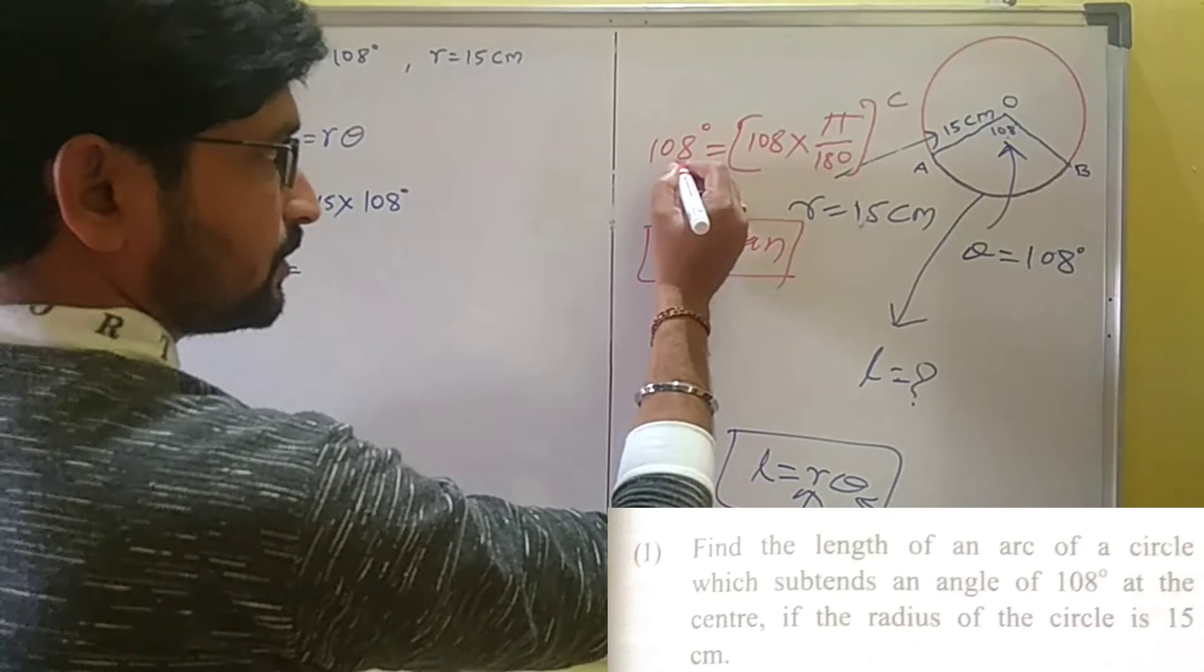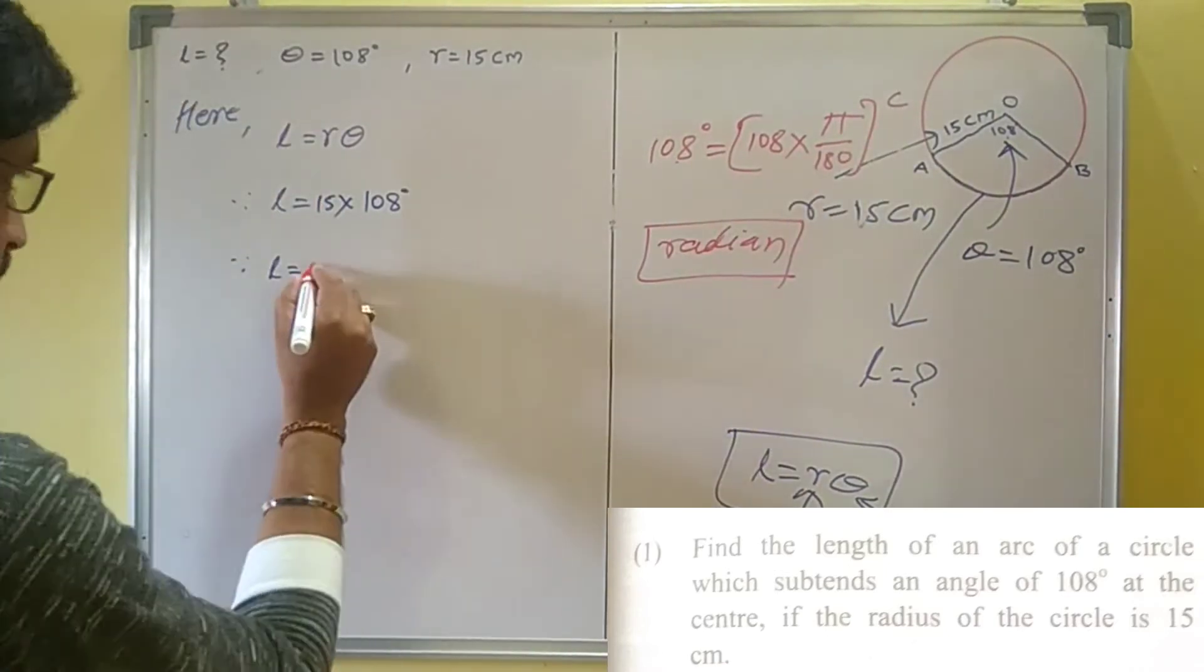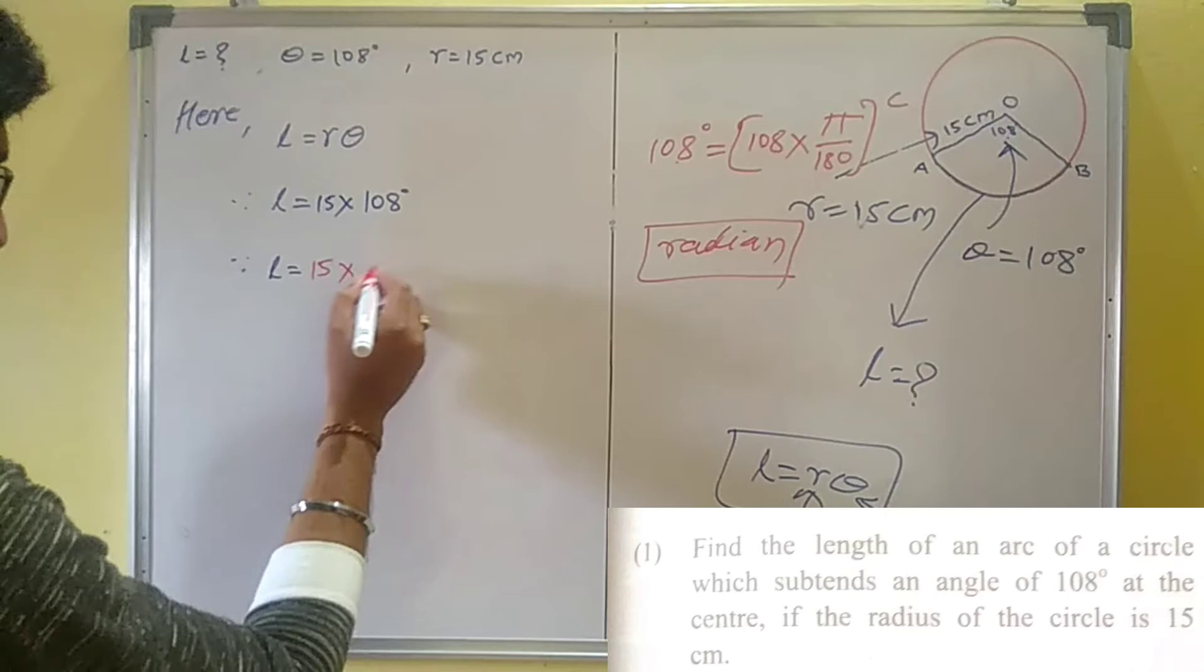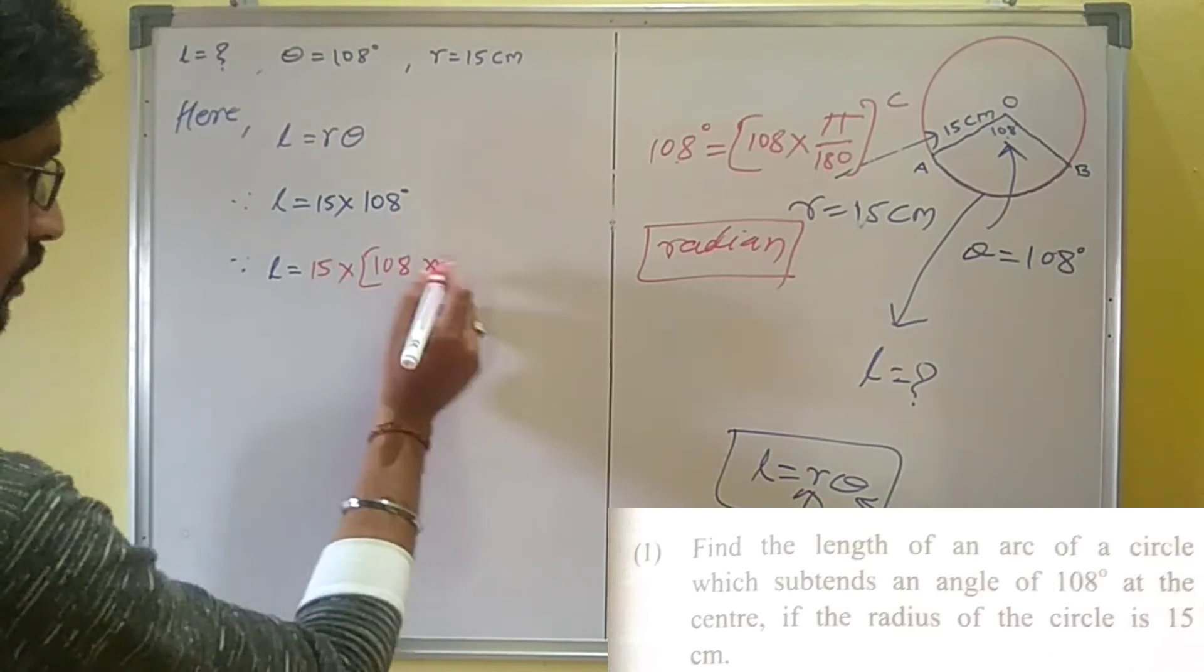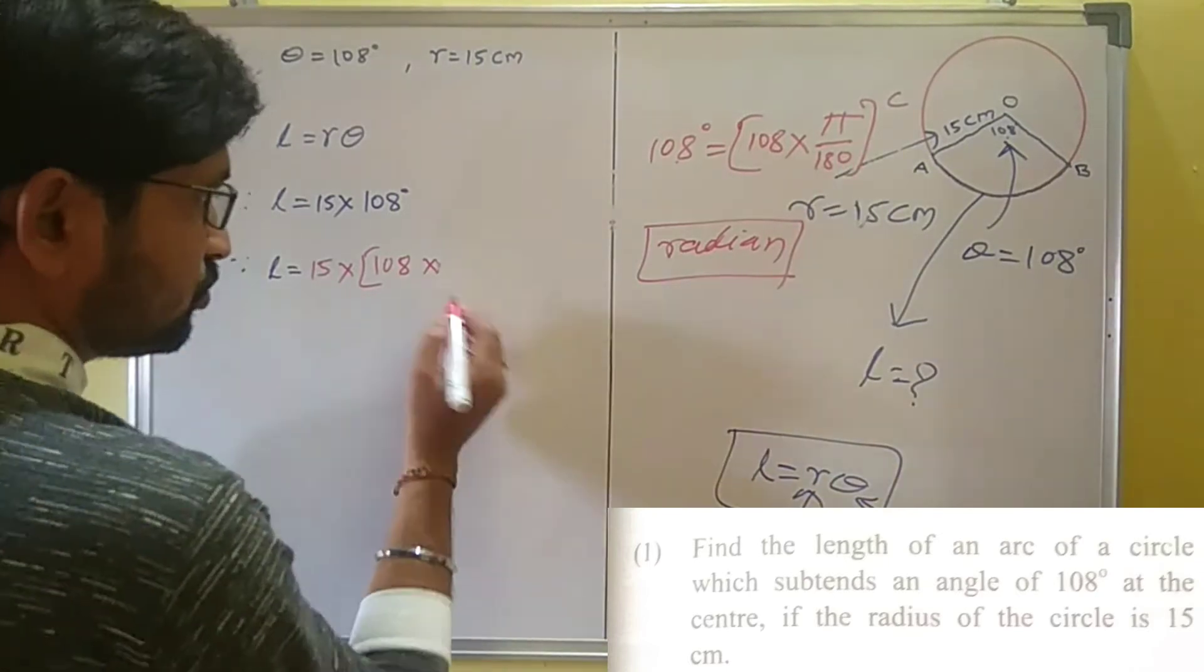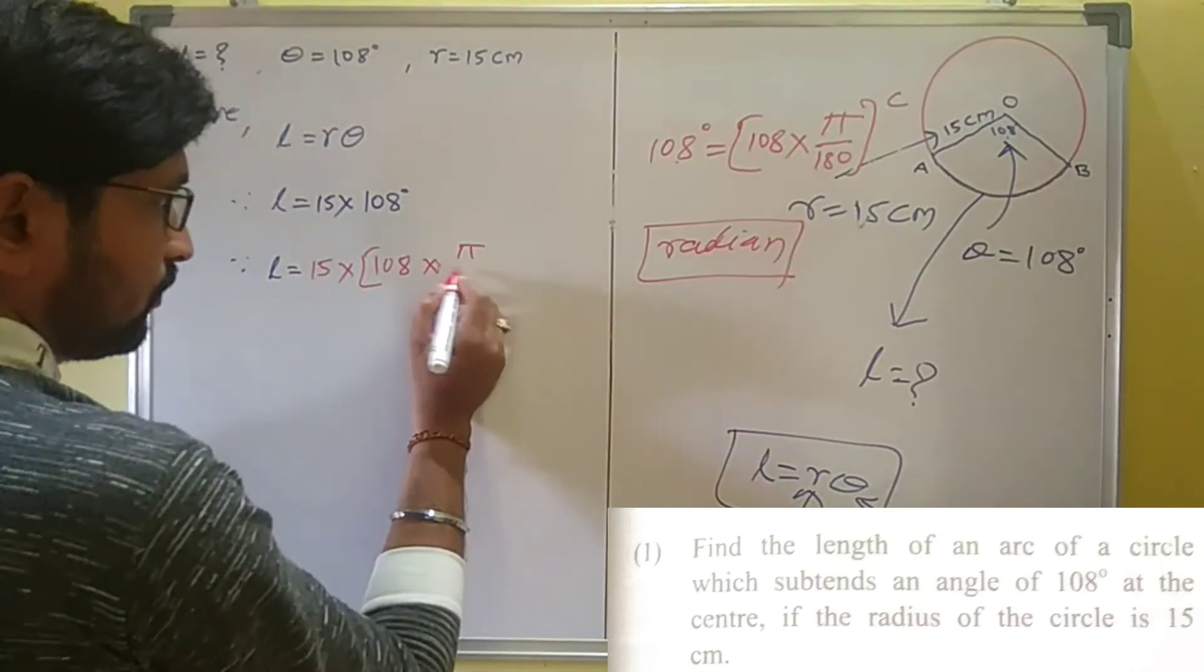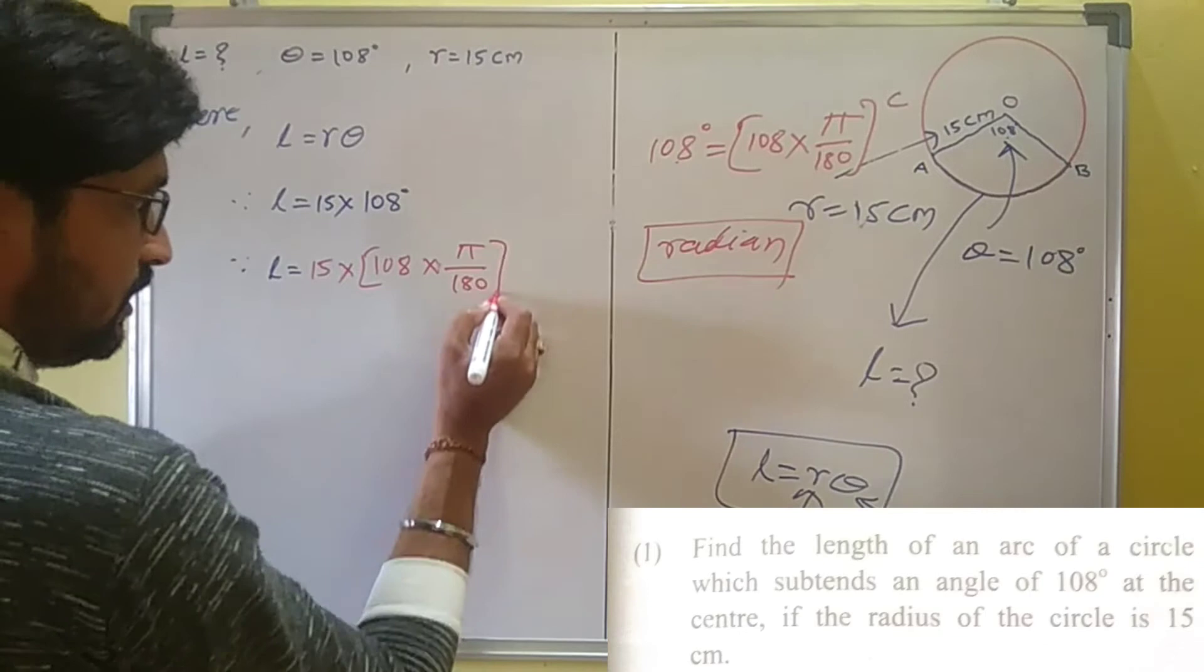So this is the conversion from degree to radian. Here first 15 as it is, then the 108 degrees angle needs to be converted to radian. So conversion from degree to radian is pi by 180 radian.